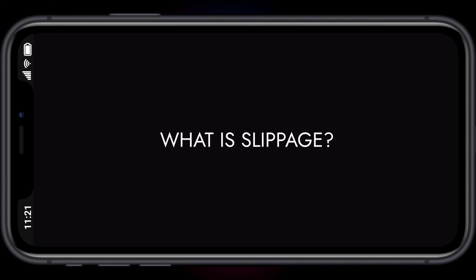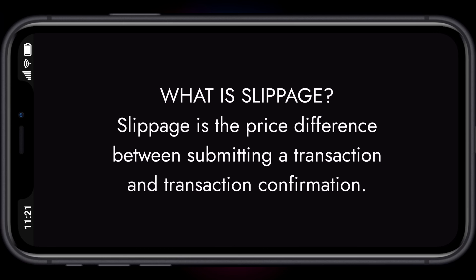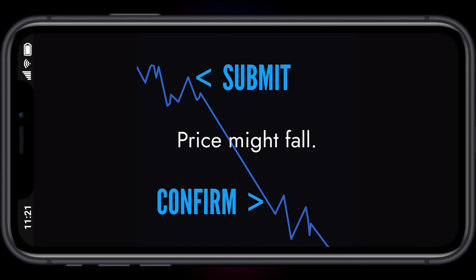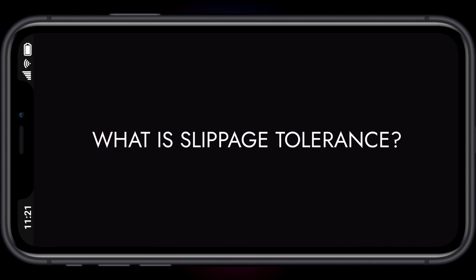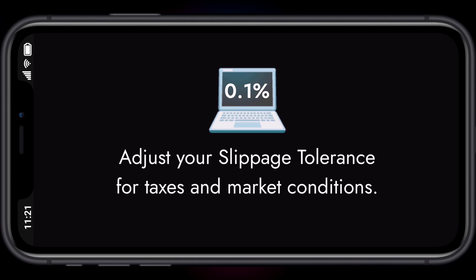What is slippage? Slippage is the price difference between submitting a transaction and transaction confirmation — the price might rise or fall. What is slippage tolerance? Slippage tolerance is a pricing difference setting that users are willing to accept when swapping. Adjust your slippage tolerance for taxes and market conditions.